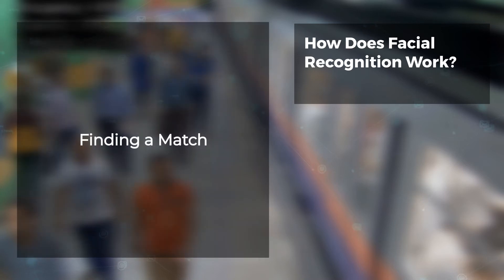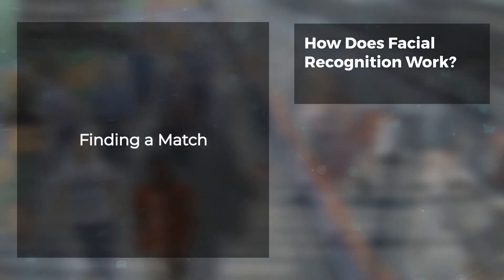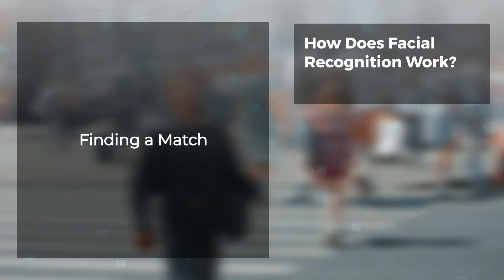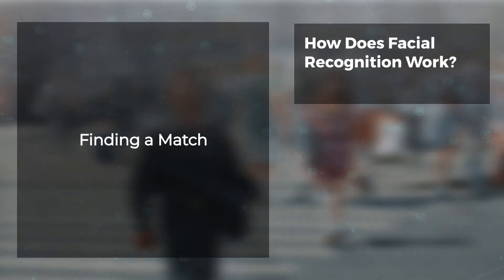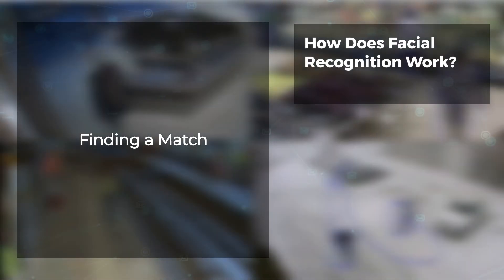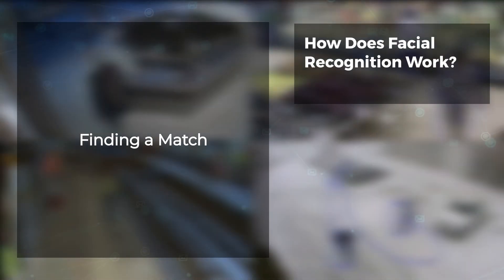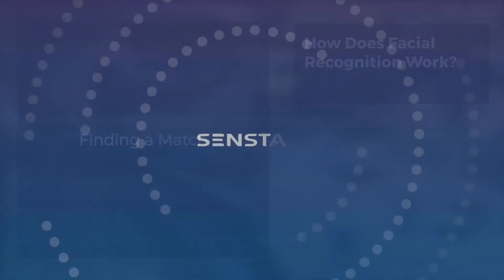Finding a match: a face print can then be compared against a database of facial photos. This process can happen in real time or asynchronously. Using mathematical algorithms that take unique facial features into account, like bone structure and skin tone, a match can be found.